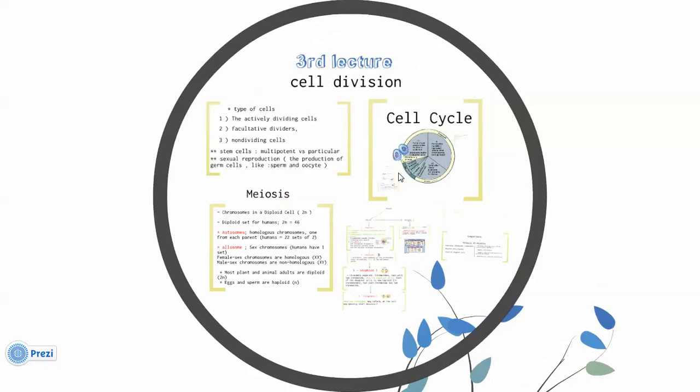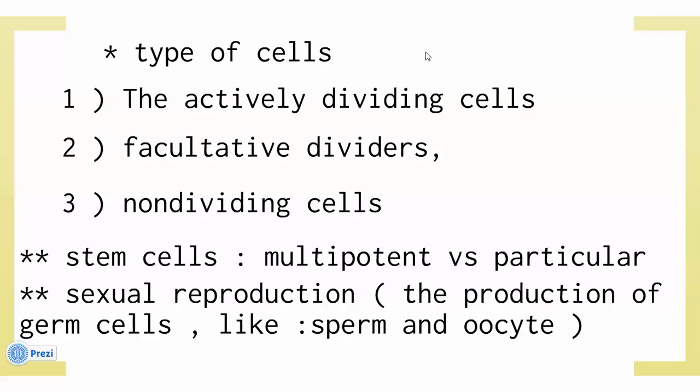Now we move to the third lecture, which was about cell division. First, we classify cells according to their division capability into three types. Type one: actively dividing cells — cells that have the power to divide, such as blood cells, bone cells, and epithelial tissue. Type two: facultative dividers — cells that have the ability to divide but need a stimulus, like liver cells. Type three: non-dividing cells — mature and differentiated cells that cannot divide, like cardiac and nervous tissue cells.